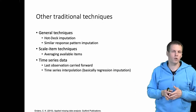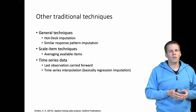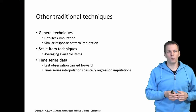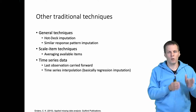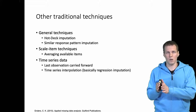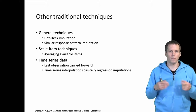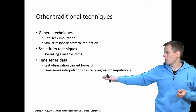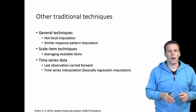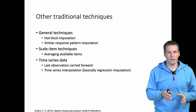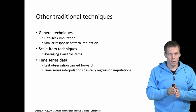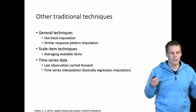For time series data, there is last observation carried forward: if we have revenue data up to 2008 and need values for 2009 and 2010, we take the 2008 revenue and apply it to those years. This will distort trends but may be defensible if the amount of missing data is very small. Time series interpolation addresses a case where we have data for 2008 and 2010 but 2009 is missing — we take the average of 2008 and 2010. This is basically another variant of regression-based imputation with the same issues.